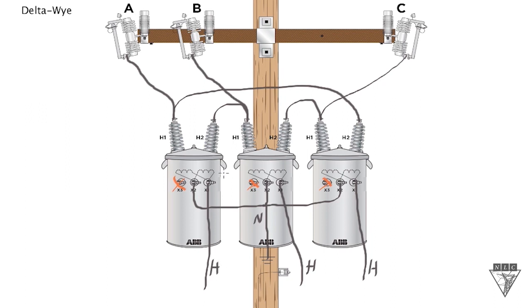So that's the secondary connection on a delta Y connection. X2s are all tied together and then grounded for your neutral, and then coming out of our X1s here, we have one hot leg per transformer.